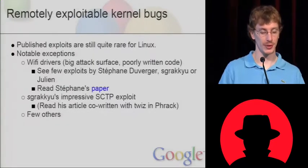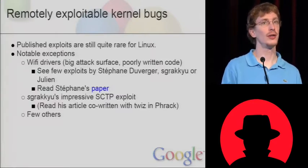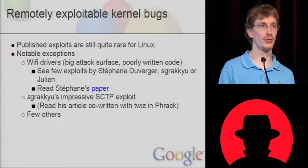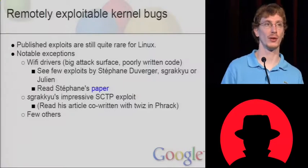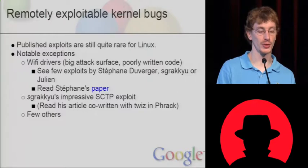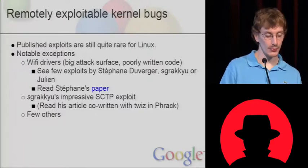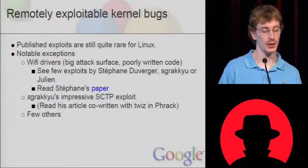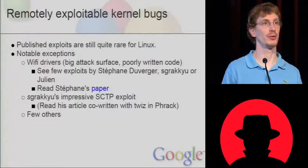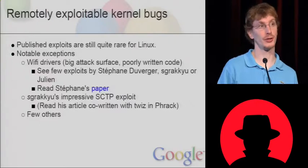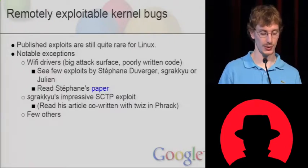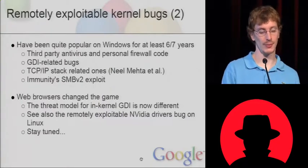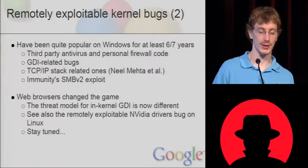In terms of remotely exploitable bugs, on Linux they have been quite rare. We've seen a few notable exceptions around 2004-2005 when Wi-Fi was getting more used and was being added to the Linux kernel — there were a few remote exploits by different people. There's also the rare sgRACU SCTP exploit which was released about two years ago. The author wrote a really interesting article in Phrack if you want to check it out. But remote kernel bugs on Linux are not very common.